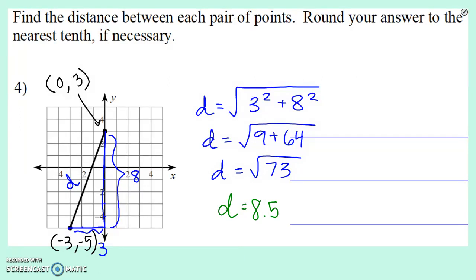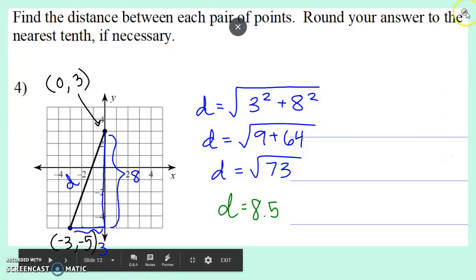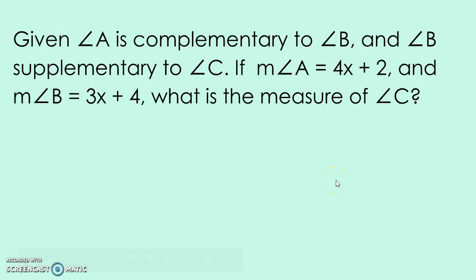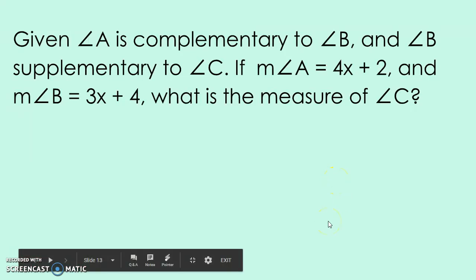So this answer will just be distance equals 8.5. And if you did the more traditional distance formula instead of that right triangle, that's totally fine. You should pretty much get the exact same answer, and even these steps right here should be very similar. All right, last question.